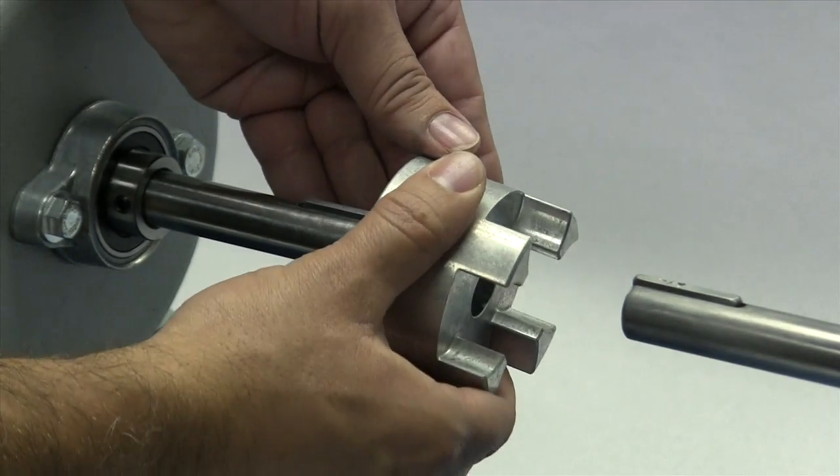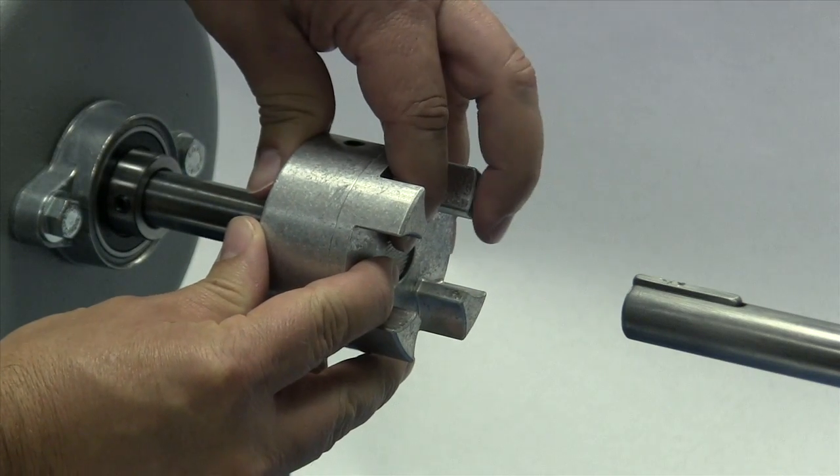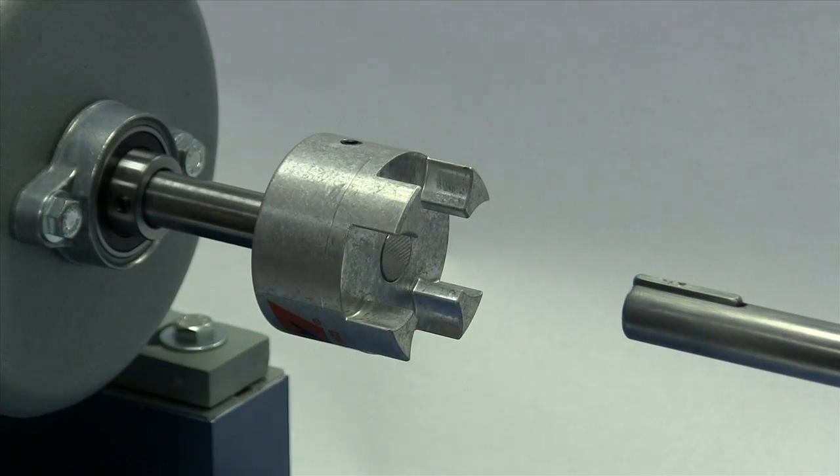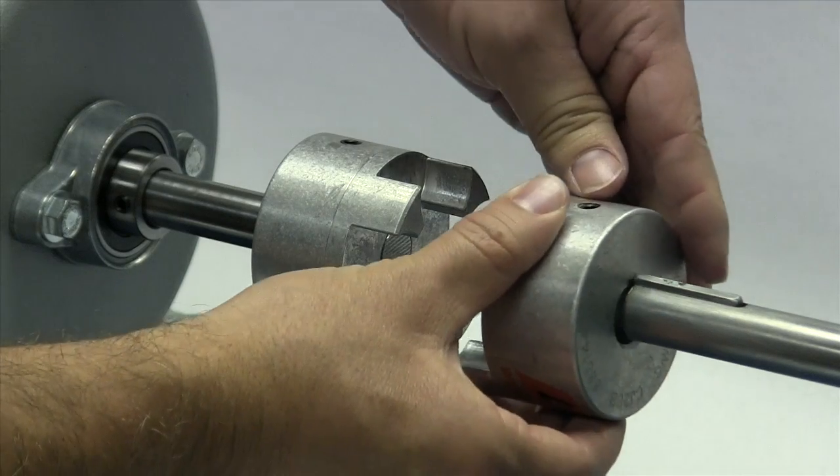Please note that the Lovejoy curved jaw coupling hubs are manufactured with a clearance or slip fit, and the hubs should slide onto the shafts with little or no difficulty.